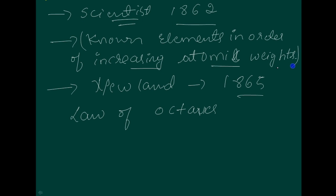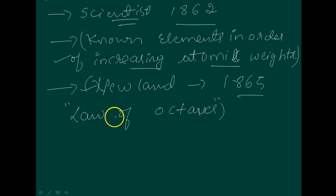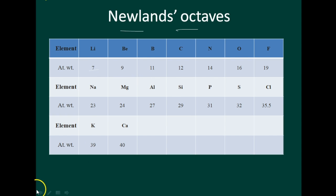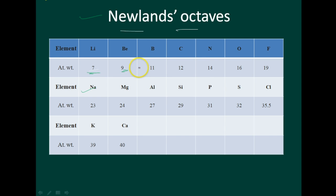Newlands arranged the elements in increasing order of their atomic weights and noted that every eighth element had properties similar to the first element. Just consider elements one through seven in increasing order — the eighth element has the same properties as the first, like octaves in music. This relationship is Newlands' Law of Octaves. However, Newlands' Law of Octaves seemed to be true only for elements up to calcium; after that it was not acceptable.